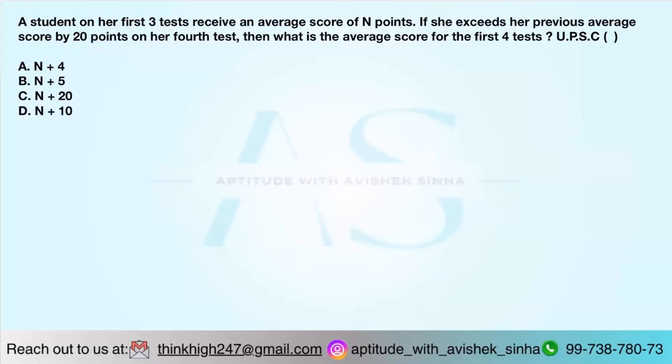A student on her first three tests receives an average score of n points. So test 1, test 2, test 3, upon 3, the average is n. Or T1 plus T2 plus T3 is actually 3n.